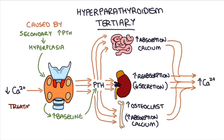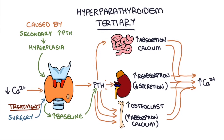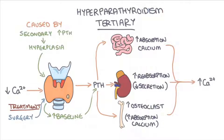We can treat tertiary hyperparathyroidism by surgically removing those big bulky glands and leaving just enough tissue to maintain a normal level of parathyroid hormone.